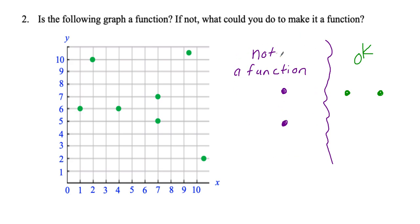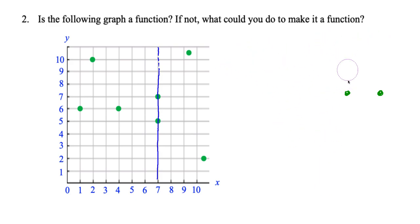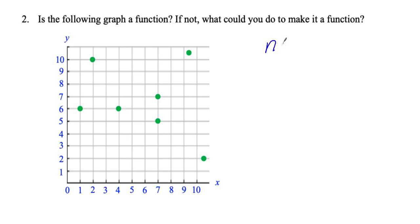So are there any points that are lined up vertically here? Let's check each point. For most points, there's no point above it or below it. But then I go to this point — there's no point above it, but there's a point directly below it right here. You can even draw a vertical line through that — it's called the vertical line test. These two points are on top of each other, so this is not a function.